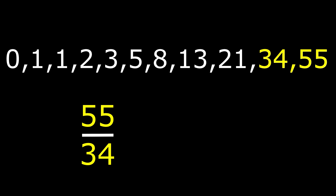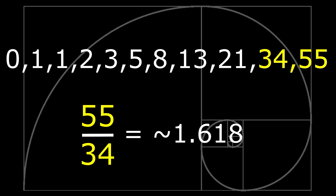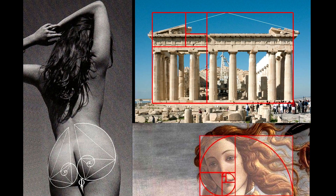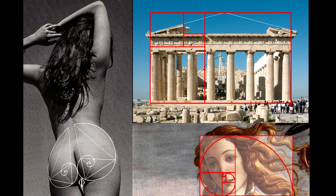If you divide the highest number from the previous you get 1.618, also known as the Golden Ratio. This ratio plays a prominent part in what we find pleasing to the eye, playing a big part in what's considered beautiful in women, art, and architecture.